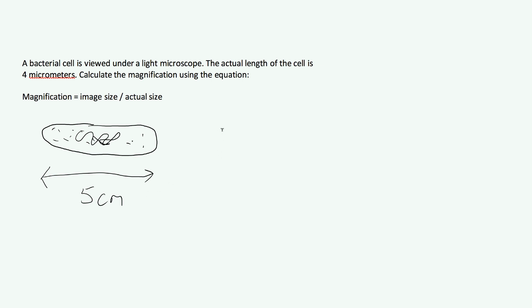Alright, so magnification, I'm just going to call it M, which we're trying to work out, is equal to the image size, which is 5cm, divided by the actual size, which is 4 micrometers. And you might see that written like this. This funny M stands for micro.